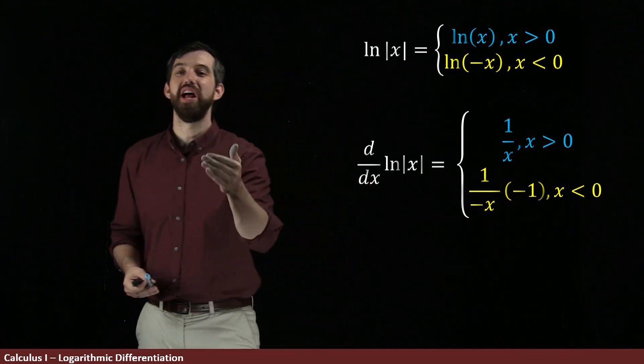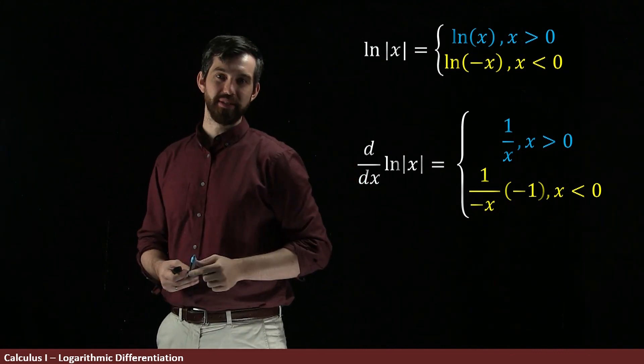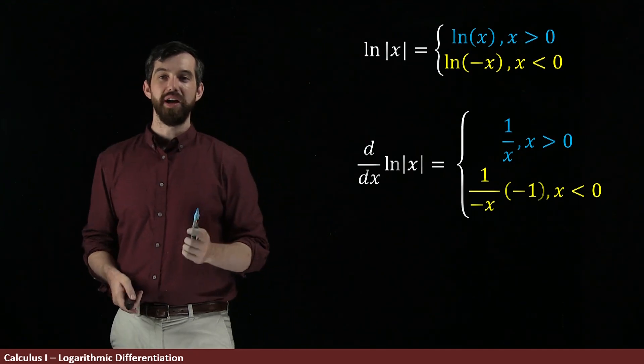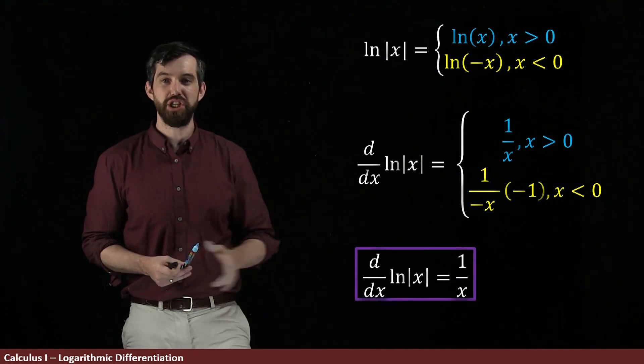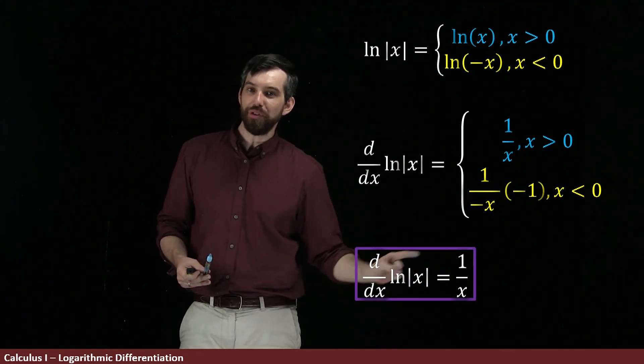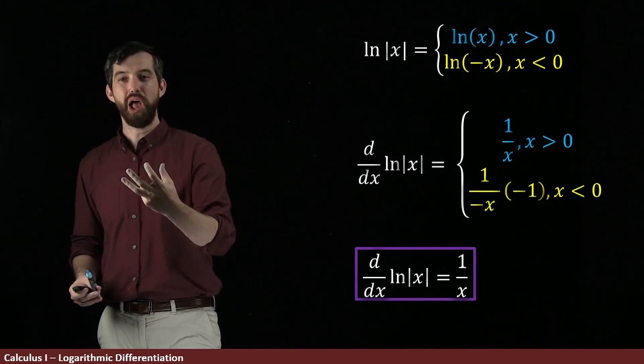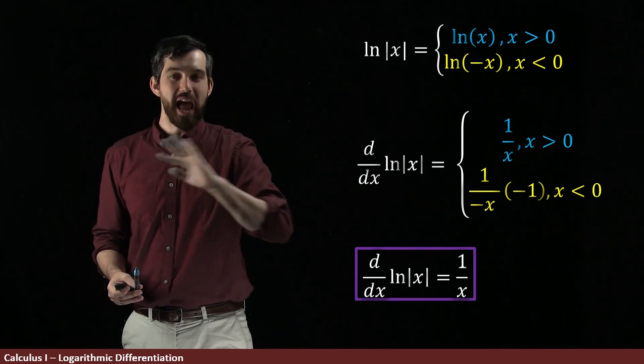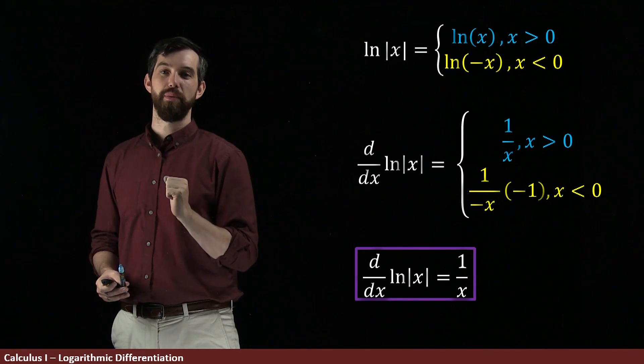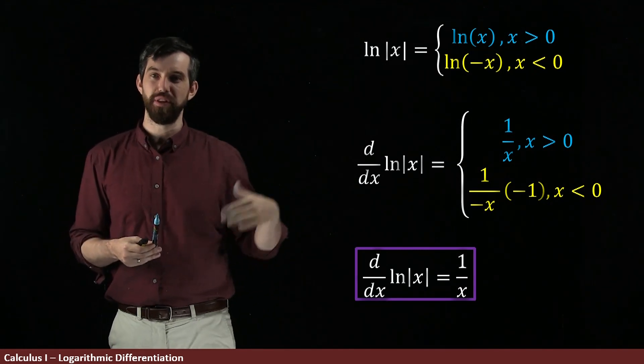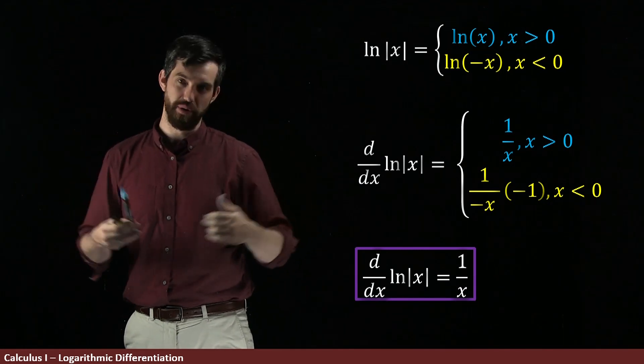That is, it's just another version of 1 over x. So I can say that the derivative of the natural logarithm of absolute value of x is just going to be equal to 1 over x and both the left and the right, the natural logarithm and 1 over x, their domain is everything except 0. And this is going to be particularly useful in the future when we get to anti-derivatives of functions.